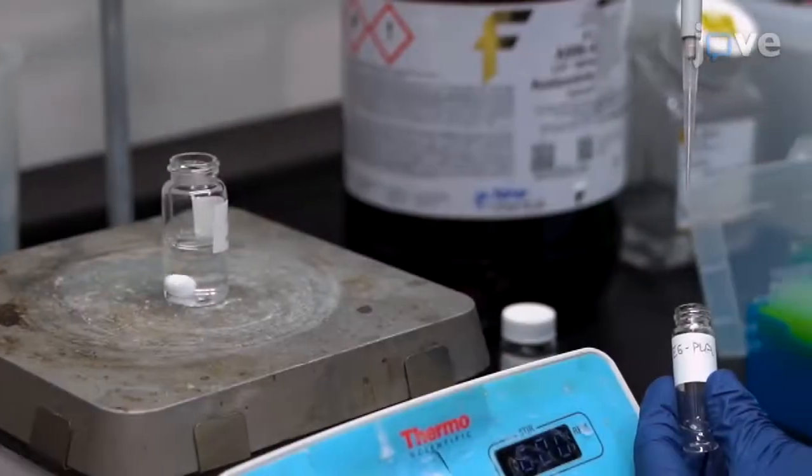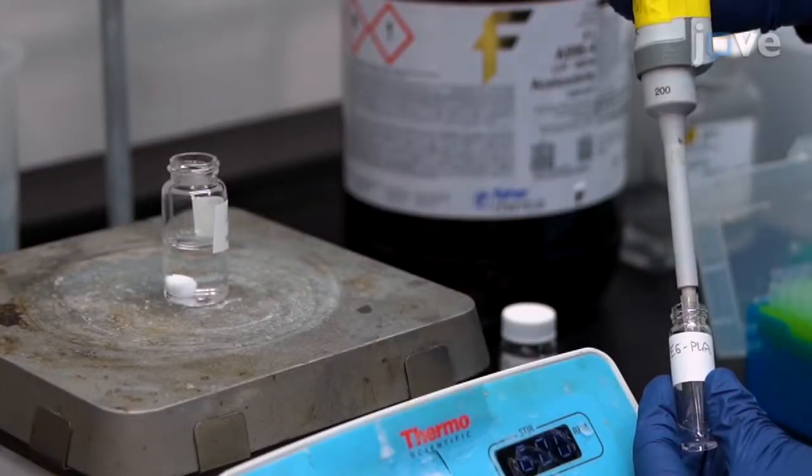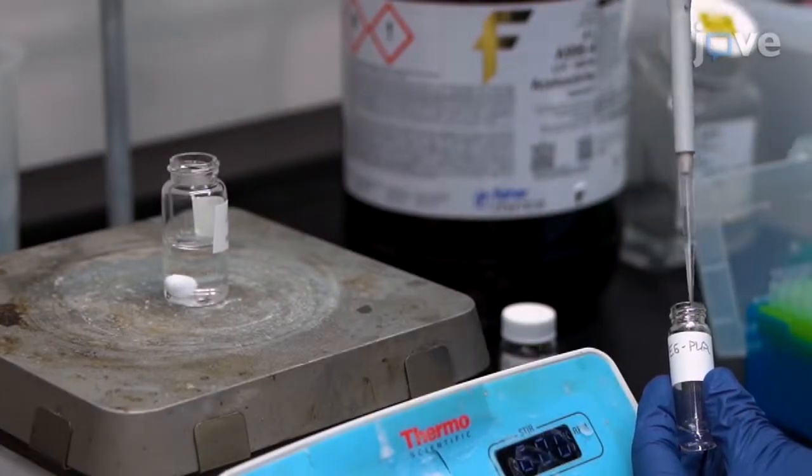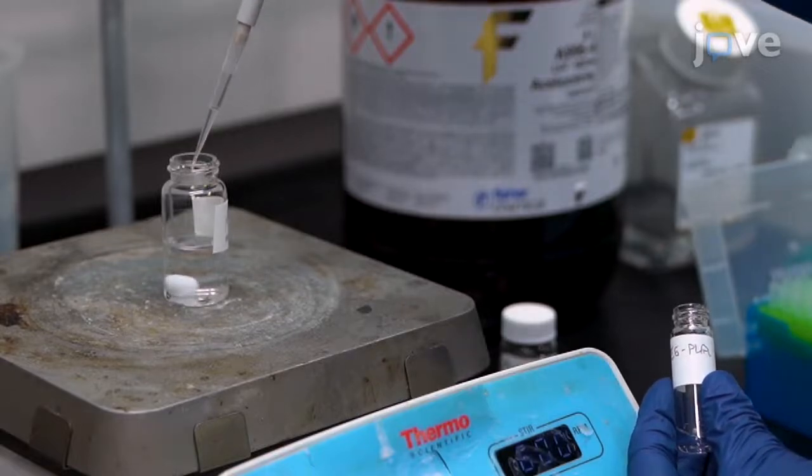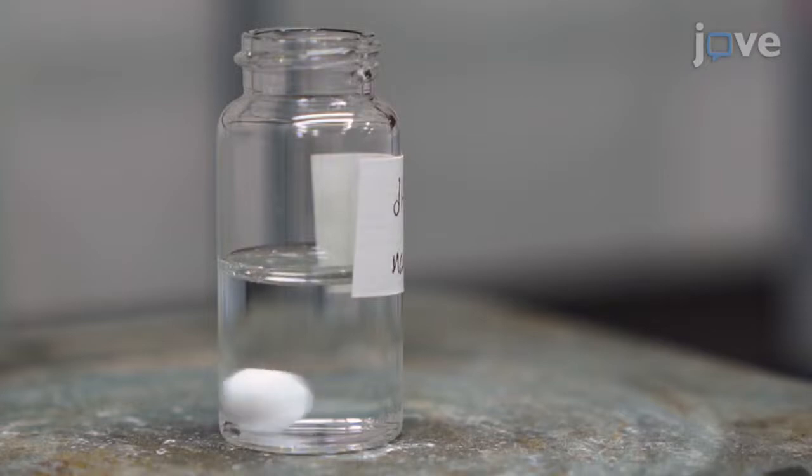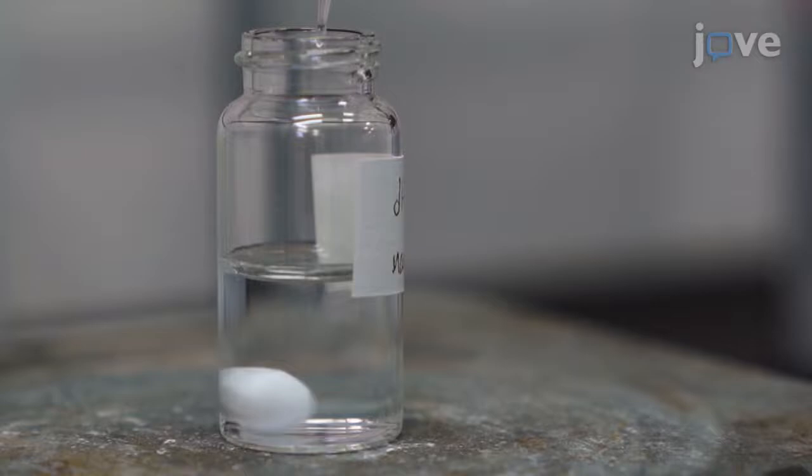Use a 200 µL pipette to add 1 mL of the polymer solvent solution dropwise to the vial of water. Core-shell nanoparticles will form as the polymer solvent solution is rapidly dispersed throughout the water.